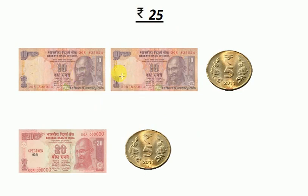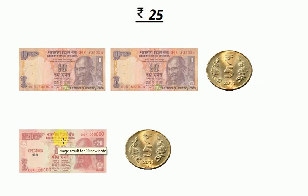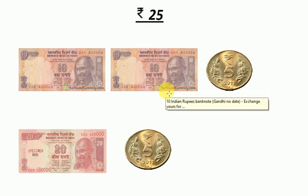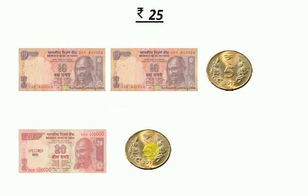You can give 2 ten-rupee notes and 1 five-rupee coin to buy the ice cream, or you can give 1 twenty-rupee note and 1 five-rupee coin to buy the ice cream. So these are the expanded forms of Rs. 25. Today we are going to write and learn the expanded forms of numbers.